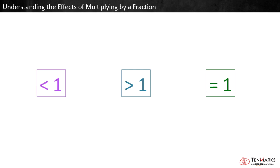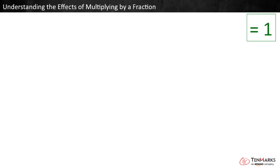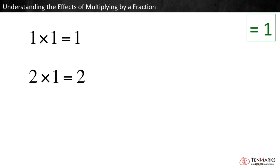Let's start with multiplying by numbers equal to 1. We know that multiplying any number by 1 produces the same number you started with. 1 times 1 is 1, 2 times 1 is 2, 3 times 1 is 3, and so on.